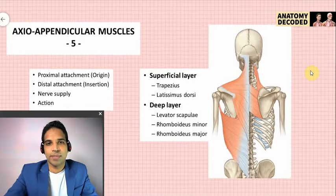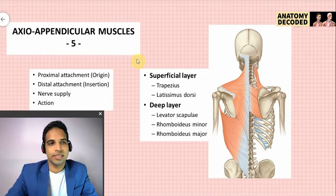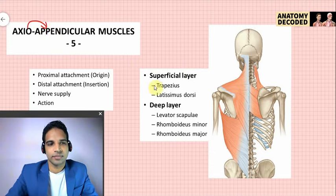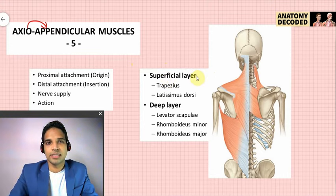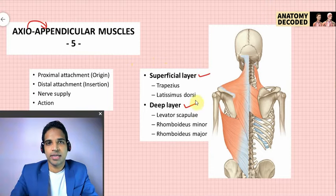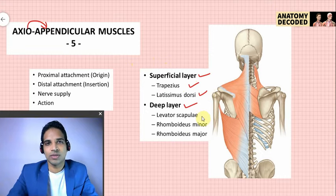Now let's cover the axio-appendicular muscles. As the name suggests, these connect the axial skeleton to the appendicular skeleton. They are also referred to as muscles of the back included in the upper limb, arranged in two layers. The superficial layer consists of trapezius and latissimus dorsi, and the deep layer consists of levator scapulae, rhomboid minor, and rhomboid major.